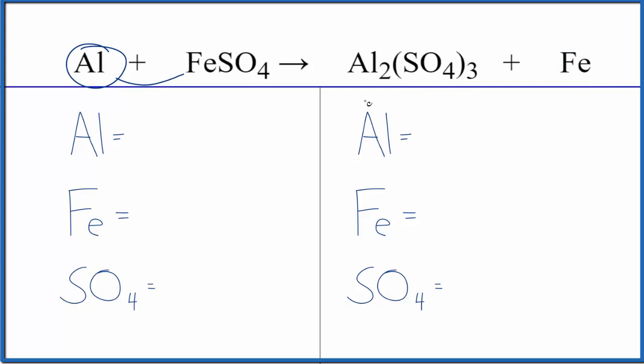To balance it, let's count the atoms up. We have one aluminum atom and one iron atom. The sulfate is a polyatomic ion, so we have it here, and again we have a polyatomic ion, the sulfate ion, over here. Let's just count this as one thing. We have one sulfate.